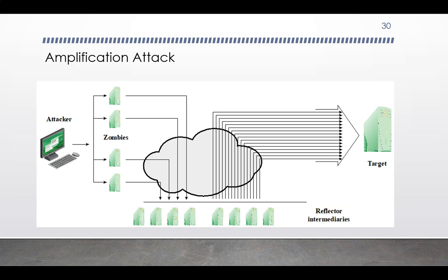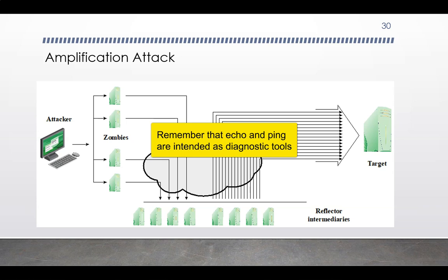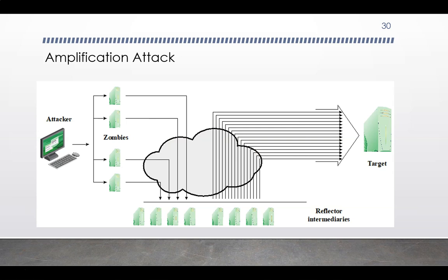The best additional defense against broadcast amplification attacks is to not allow directed broadcasts to be routed into a network from outside. If this filtering is in place, these attacks cannot succeed. Another defense is to limit network services like echo and ping from being accessed from outside an organization. Attackers scan the internet for well-connected networks that allow directed broadcasts and implement suitable services they can reflect off. These lists are traded and used to implement such attacks.